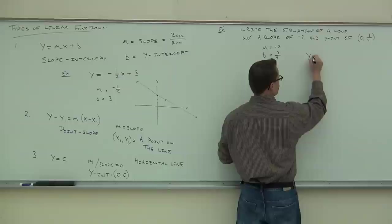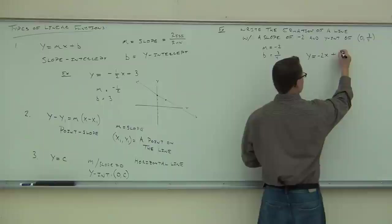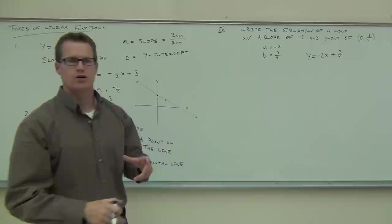So we'd say y equals — we're going to substitute in negative 2 for the m — and we're going to substitute in three-fourths. Since three-fourths is positive, we put plus three-fourths. If it had been negative three-fourths, we would be putting minus three-fourths. That's our equation of our line in slope-intercept form because we were given the slope and the y-intercept.